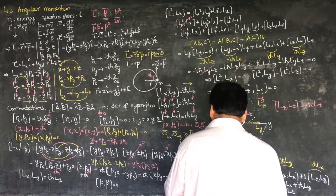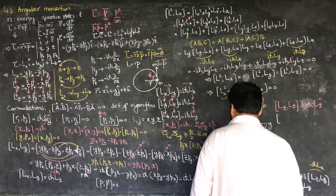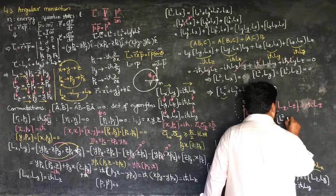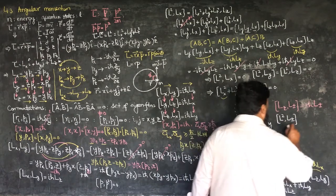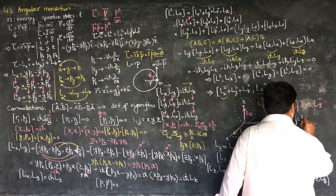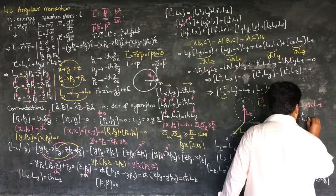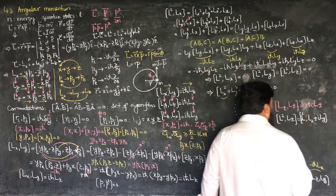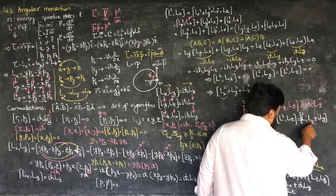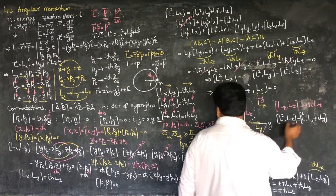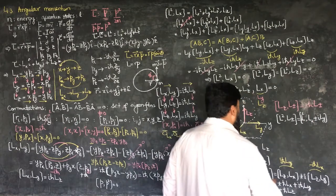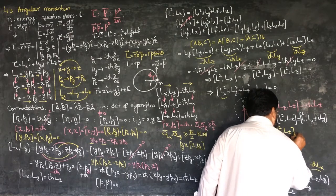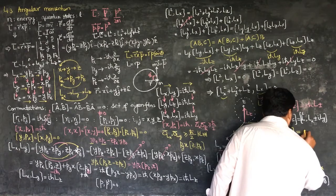The second important result: [L², L±]. Since L± equals Lx ± iLy, the commutator [L², L±] equals [L², Lx] ± i[L², Ly]. We already proved that L squared commutes with all its components — both [L², Lx] and [L², Ly] equal zero — so [L², L±] = 0.